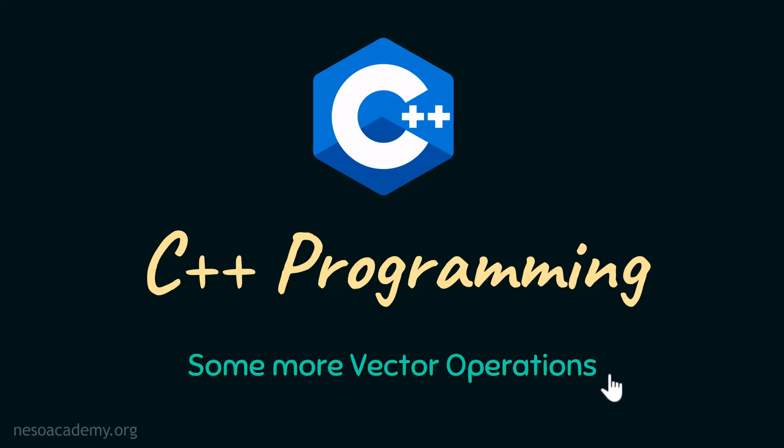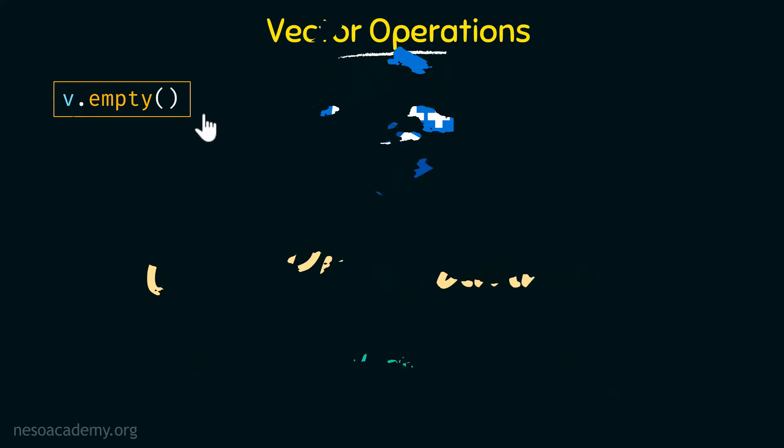In the previous lecture, we discussed one of the most important vector operations, which was adding elements to a vector. Now in this lecture, we will discuss some more vector operations and we will also quickly see each of their workings in Visual Studio Code to make it clear.